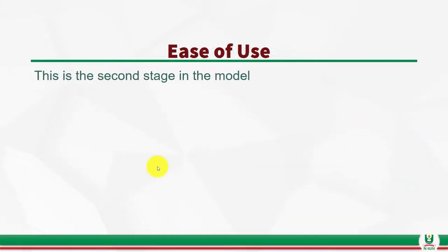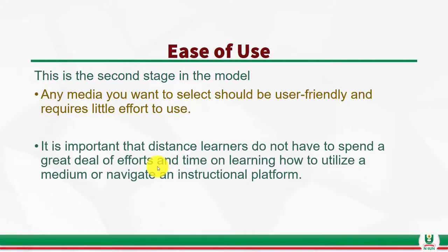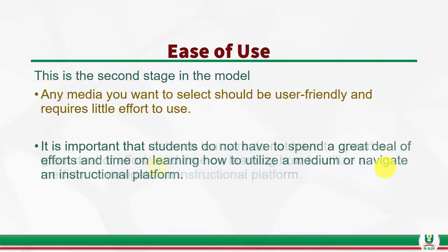The second variable of the SECTIONS model is Ease of Use. Any media you want to select should be user-friendly and require little effort to use. It's important that students do not have to spend a great deal of effort and time learning how to utilize a particular medium or navigate an instructional platform. If a platform will be very difficult for students to navigate, don't use it.